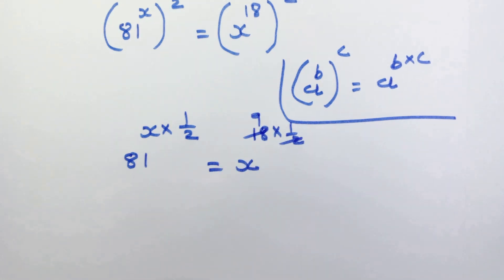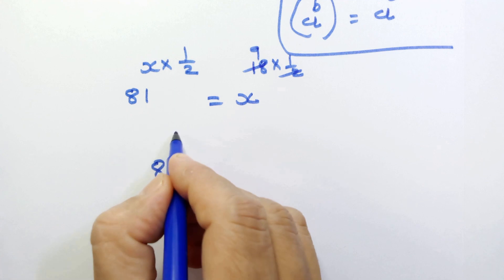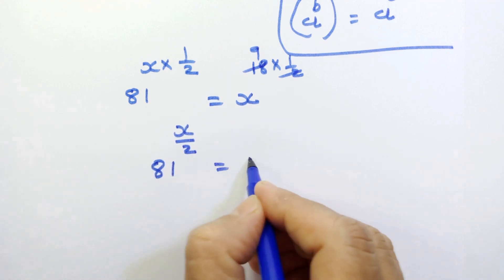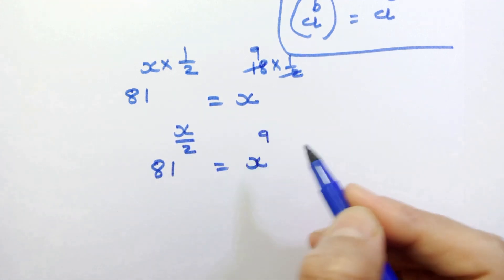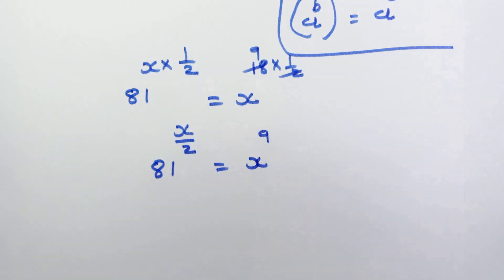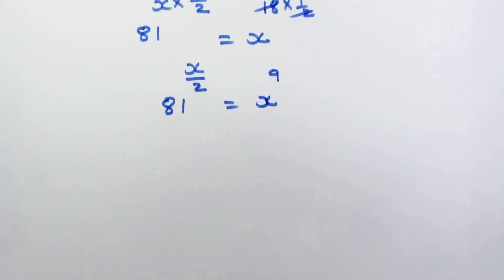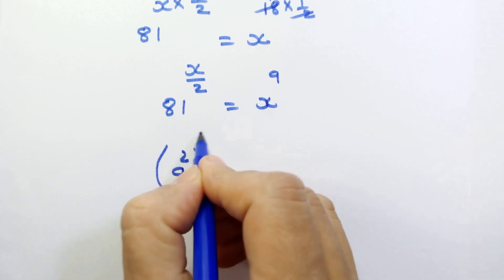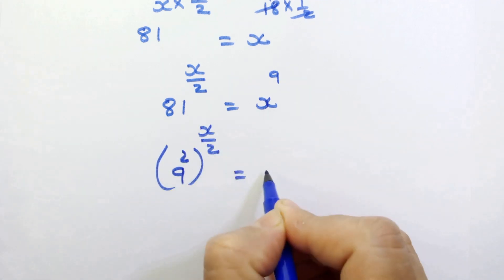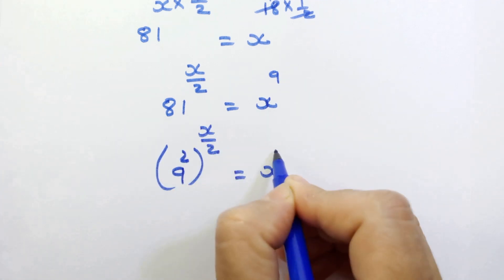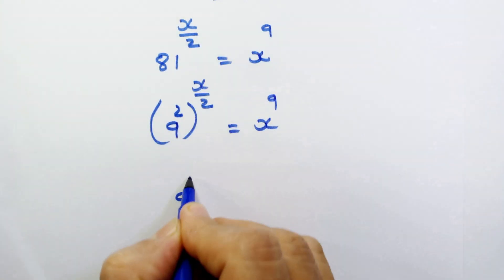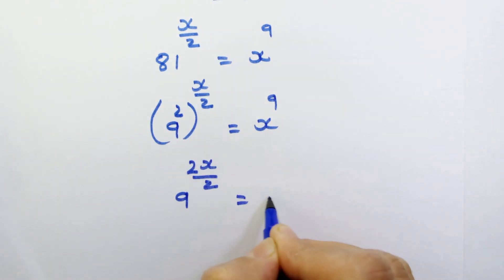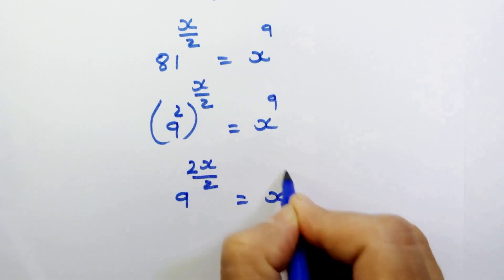9 twos are 18, so we have 81 raised to x upon 2 is equal to x raised to 9. Now 81 is 9 squared, so here we can write 9 squared, whole raised to x upon 2, is equal to x raised to 9. So our next step is 9 raised to 2x upon 2 is equal to x raised to 9.